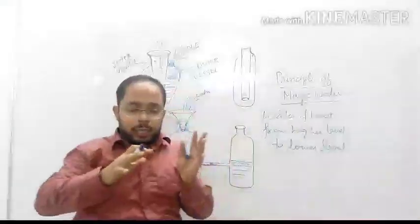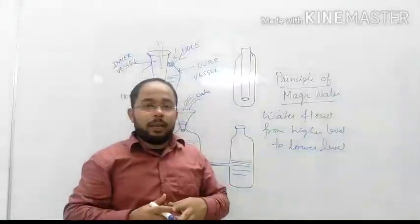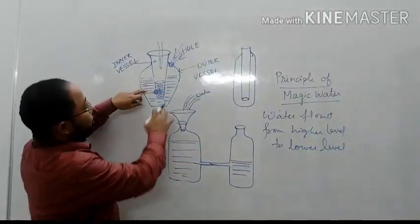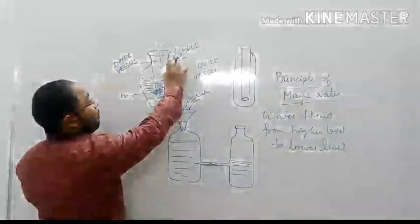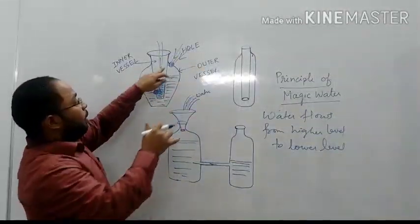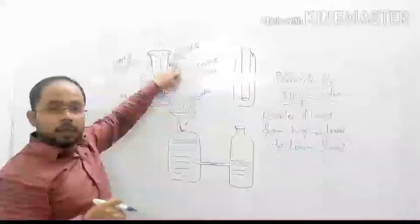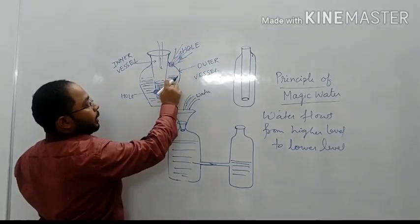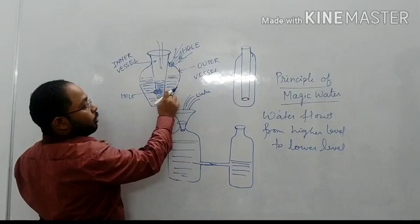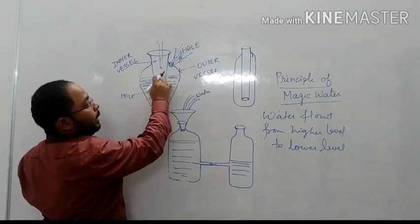When the magician keeps the pot on the table, again some water comes out. Why this water comes out? Because when the magician leaves his hand from this hole, the air - the atmospheric air - rushes inside it, which is applying pressure on this water and again it allows the water to accumulate here.